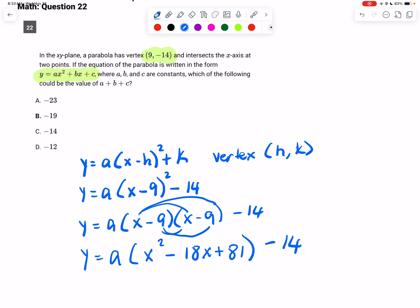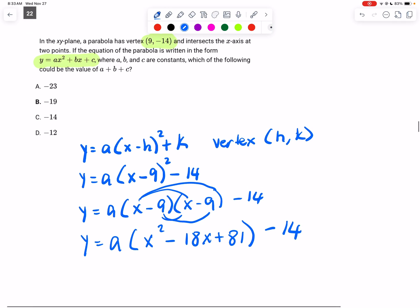Alright, so now we can expand it. We're going to just multiply everything by a, and we get that y is equal to ax squared minus 18ax plus 81a minus 14.